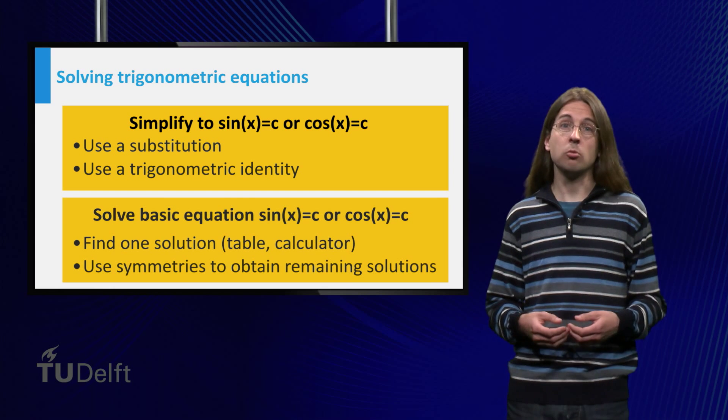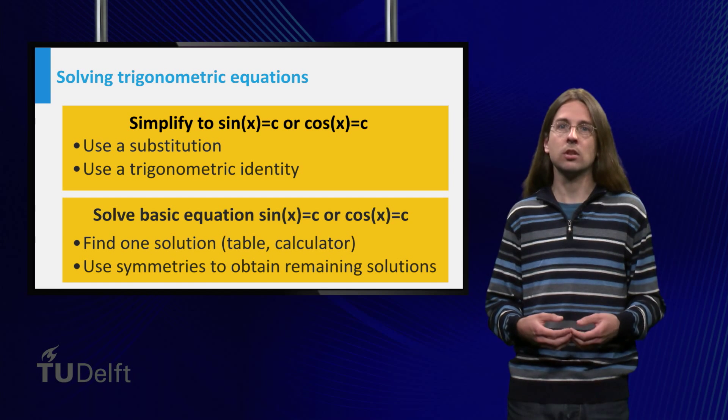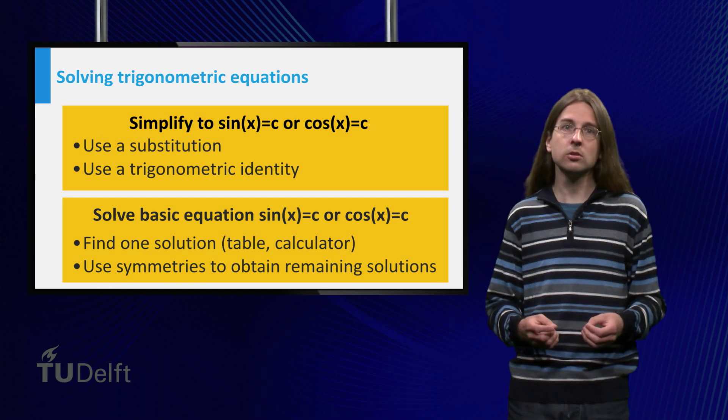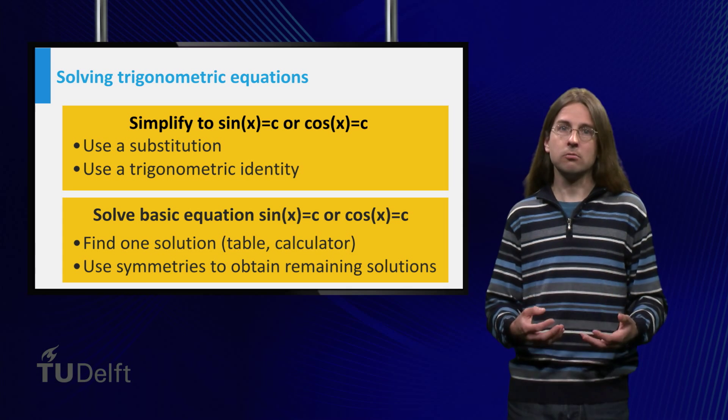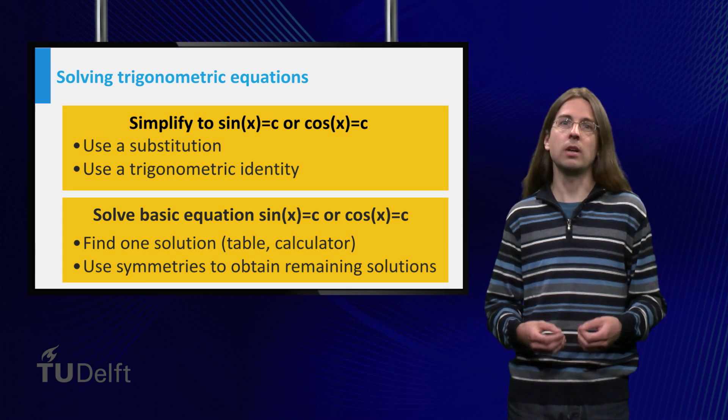To solve a basic equation, sin(x) = constant or cos(x) = constant, you first find a single solution by looking in the table or using your calculator. And subsequently use the graph of the function to obtain all other solutions.